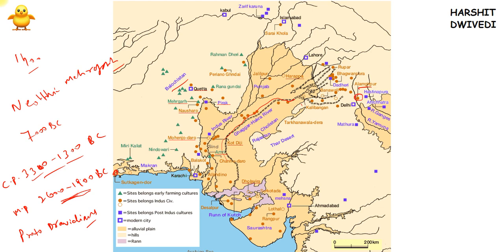Harappa was the first site to be discovered. The discovery of these sites started in an unusual manner — they were discovered while the British were still ruling India. The British started the work of laying railway lines, and workers accidentally stumbled upon an ancient site.